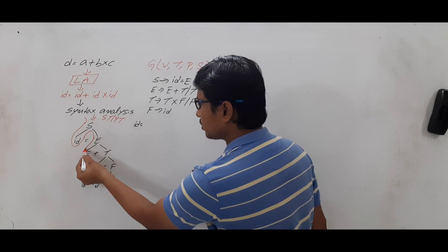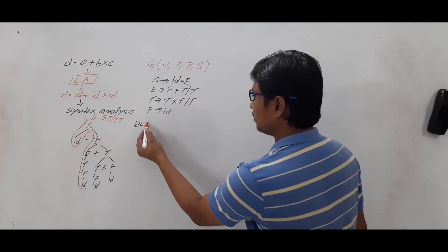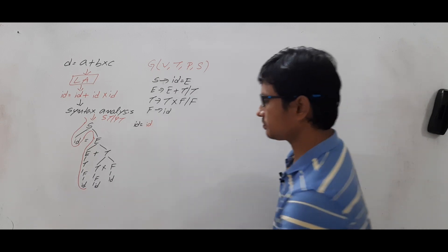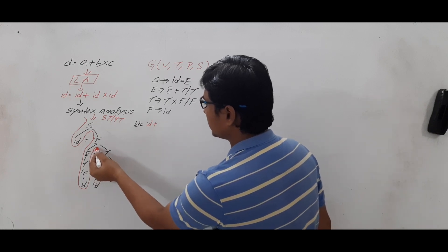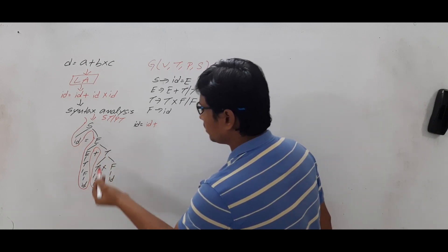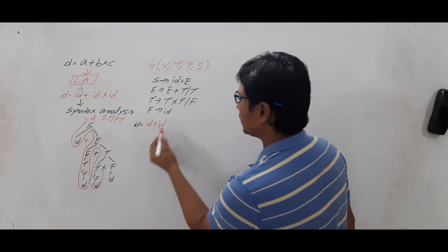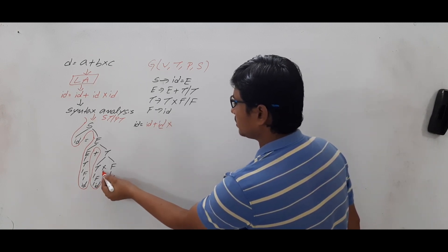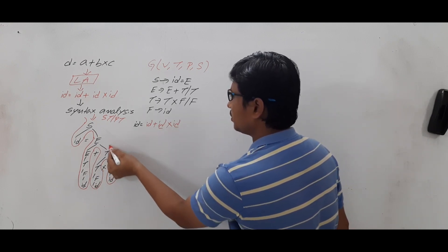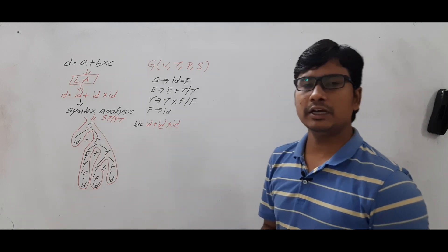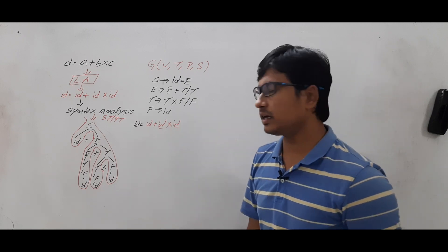To yield the parse tree, we start from the start symbol and go left to right. Whenever we encounter a terminal we place it — ID is a terminal. Whenever there is a non-terminal we continue expanding until we reach a terminal. We write the identifier, then move right, get the plus terminal and write it, continue expanding non-terminals, and finally get all the identifiers as terminals. This entire process is called yielding of a parse tree, confirming it is syntactically correct.